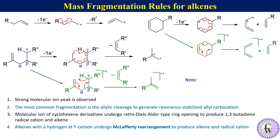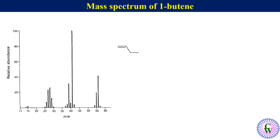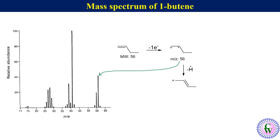One thing to be noted here is that mass spectrometry of alkenes doesn't give any information about E/Z isomers. Let's look at the mass spectrum of 1-butene. The molecular weight of 1-butene is 56; upon electron bombardment it eliminates one pi electron to produce a molecular cation with m/z value of 56. It then eliminates an H radical to produce an allyl cation.